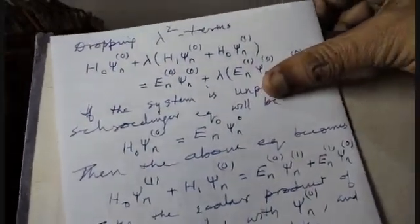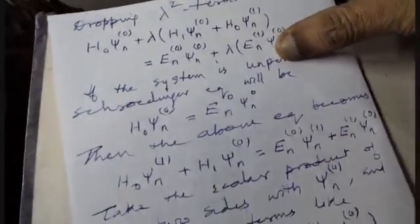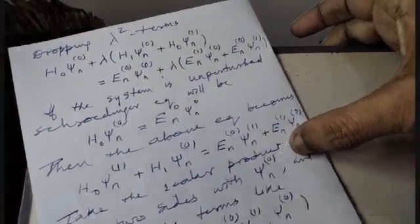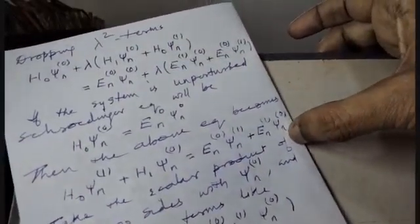The zeroth-order equation is just the unperturbed Schrödinger equation: H0 psi-n0 equals en0 psi-n0. Using this, the first-order equation reduces to: H0 psi-n1 plus H1 psi-n0 equals en0 psi-n1 plus en1 psi-n0.